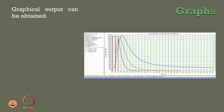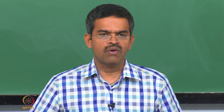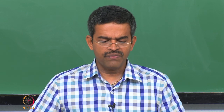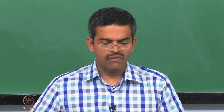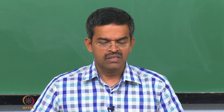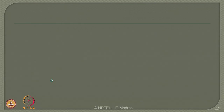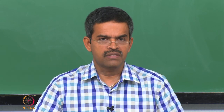In this lecture, we talked about graphical output, long pipeline discharge, cloud concentration, pool vaporization, and the use of software in general for all kinds of model analysis and risk analysis in oil and gas industries. We discussed in detail a specific application problem using PHAST Risk software, covering different modules including pool vaporization, jet fire, fireball, pool fire, flash fire, and toxic effects. A running video example of this software will also be shown for better use by practicing engineers. Thank you very much.